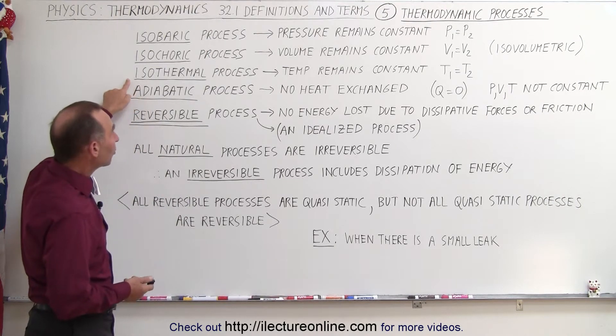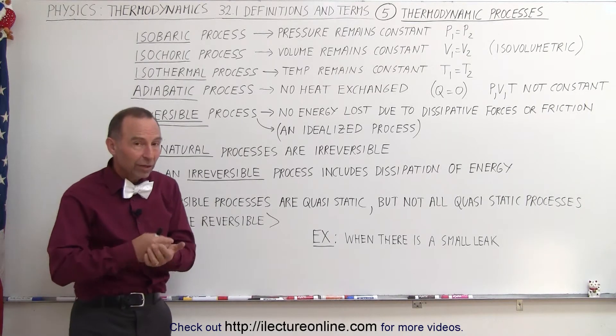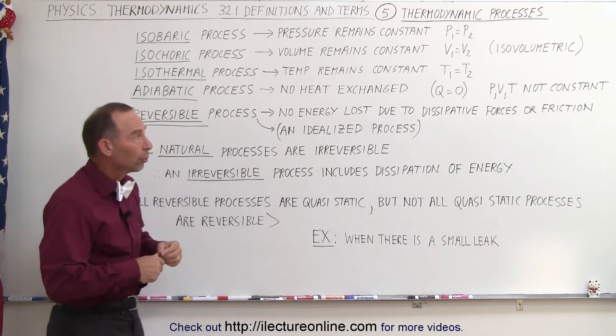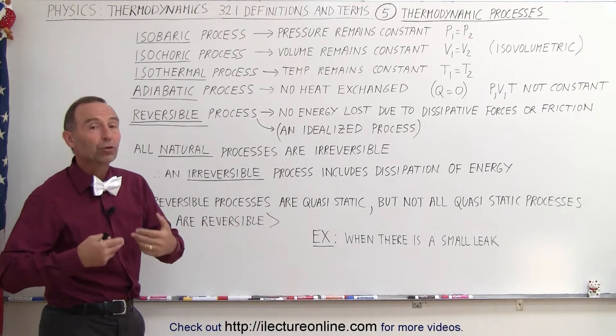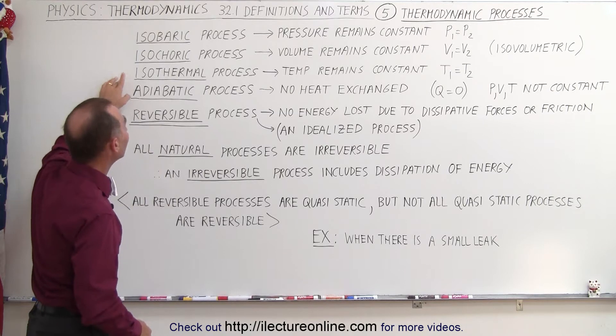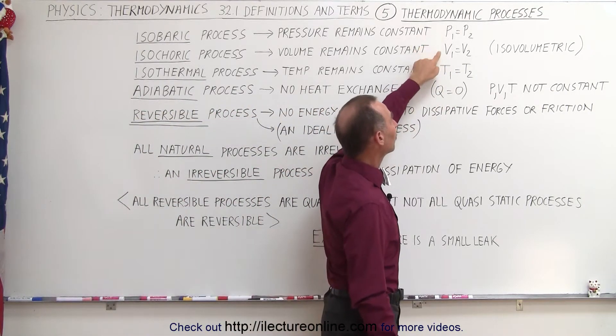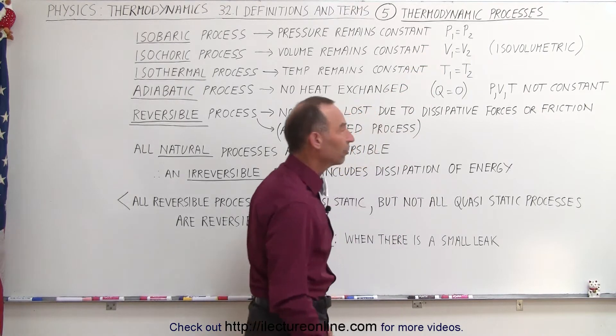Isothermal process means the temperature remains constant. So the initial temperature, the state one temperature, equals the state two temperature, which means that the other two state variables could change. We have those three processes, each one representing a change in the state where either the pressure, the volume, or the temperature remains constant.